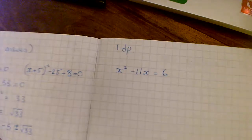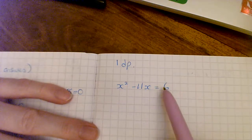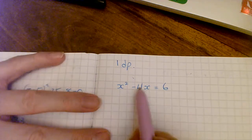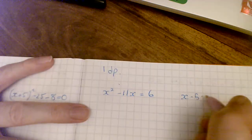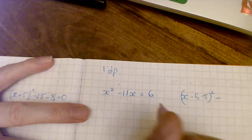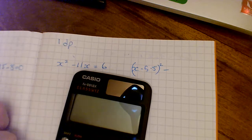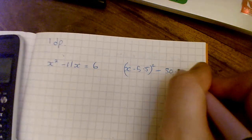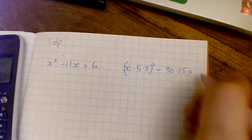On this question there's a number on the right side of the equals sign. I'm going to leave it there and complete the square on the left side, ignoring that it's not equal to zero. So I get x minus 5.5 squared, then take away 5.5 squared. This is a calculator exercise: 5.5 squared is 30.25. The right-hand side is just 6.